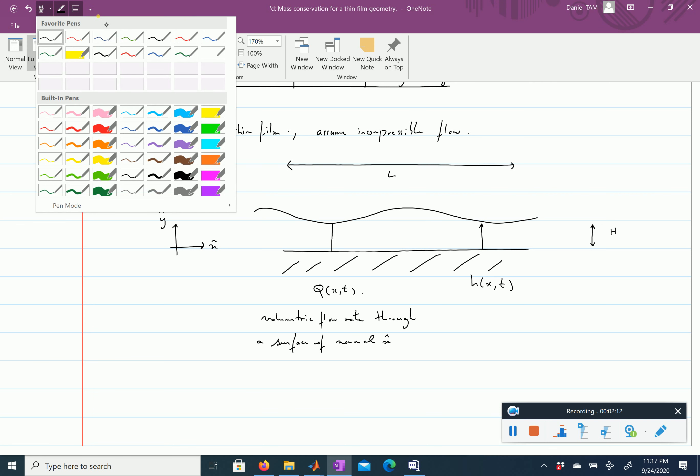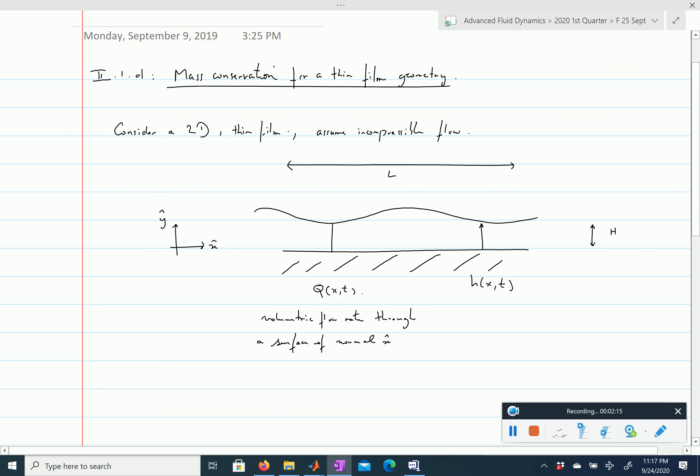Remember, if our velocity field is u, then the volumetric flow rate is q equals the integral from 0 to h(x,t) of u·n dy. But n is x, so it's just the u component. There's an implicit integration along the z direction into the plane, but we're not writing it here.